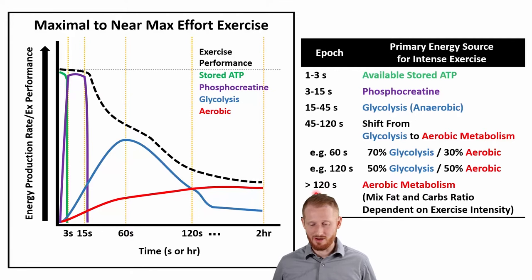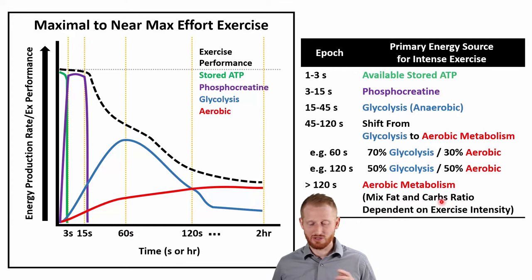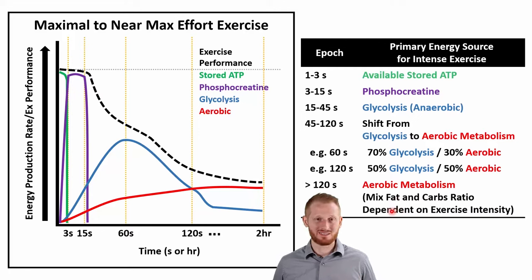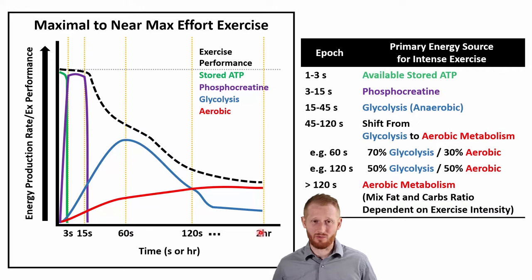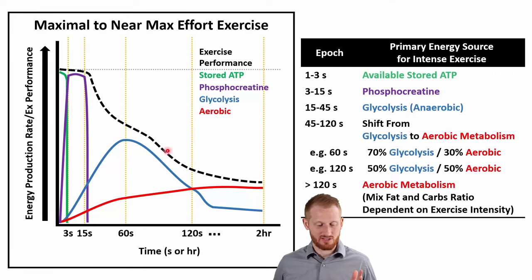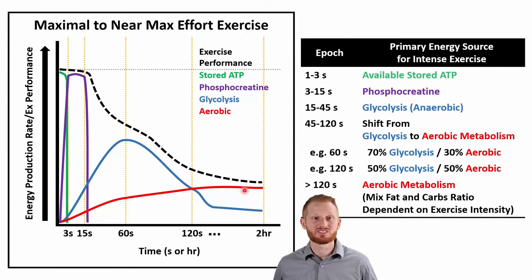Beyond two minutes, we're primarily using aerobic metabolism — a mixture of fat and carbohydrates. Higher intensities favor carbohydrates; lower intensities favor fats. For higher intensities, primarily carbohydrates up until about two hours, where most people start to run out of carbohydrate stores and are forced to use more fat. In a marathon, people talk about hitting the wall around two hours — that's when they're running out of carbohydrates. Each time we progress down these energy pathways, exercise performance goes down further.